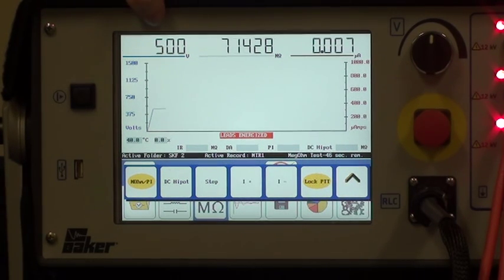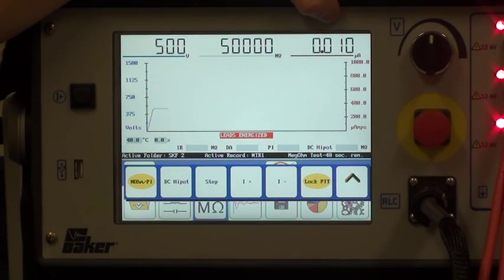The voltage is indicated here. The megaohm value is indicated here. And the microamp leakage is indicated here.